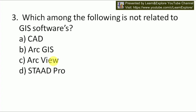Next question: which among the following is not related to GIS software? Options are CAD, ArcGIS, ArcGreen, and StatPro. Among all these, StatPro is the one which is particularly used for structures and its analysis in civil engineering, and it is not used as GIS software. So our answer will be D — StatPro is not related to GIS software. CAD, ArcGIS, and ArcGIS are GIS software.